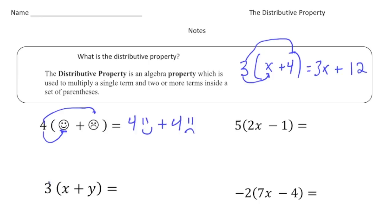Let's try this one. Here we have three groups of x plus y. So 3 times x is 3x plus 3 times y is 3y.